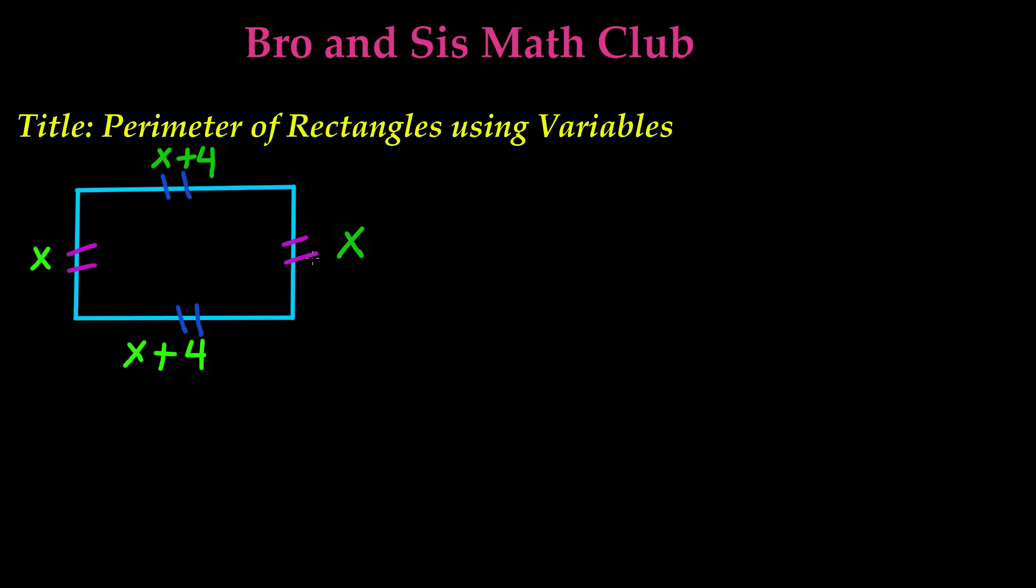So in order to find the perimeter of this rectangle, all we have to do now is add all of these together. So we have x, we have another x, we have an x plus 4, and we have another x plus 4.